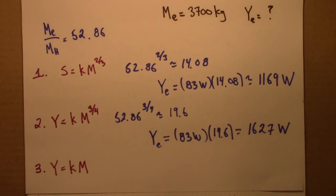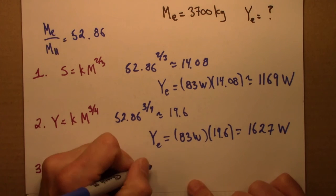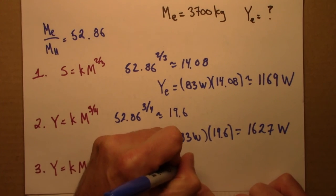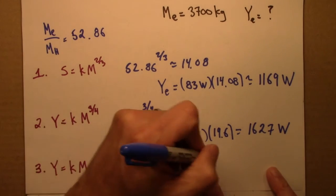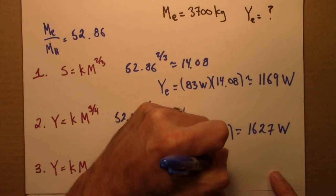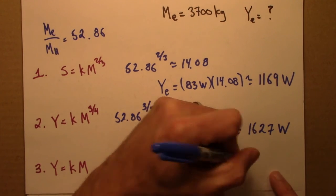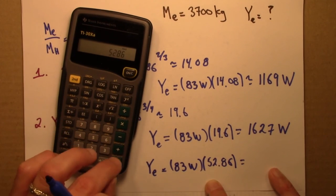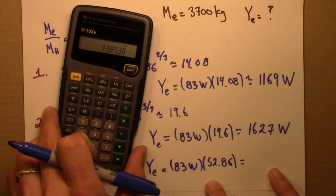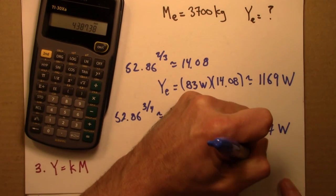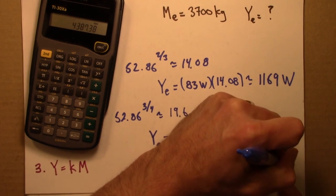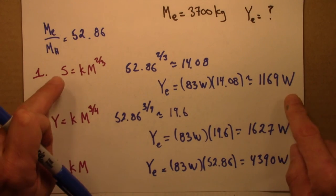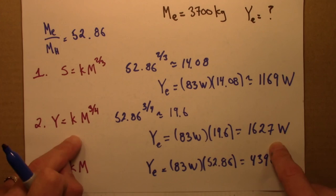and that would give me a predicted metabolic rate for the elephant that's very large. That would be 83 times 52.86. About 4,319. So linear scaling, surface area scaling, actual scaling.